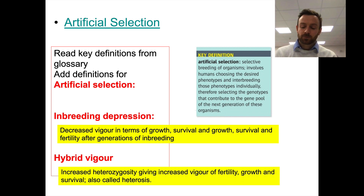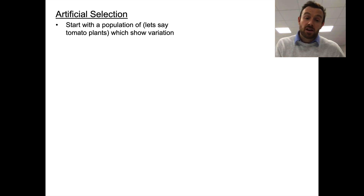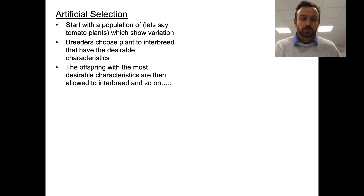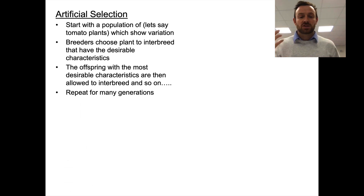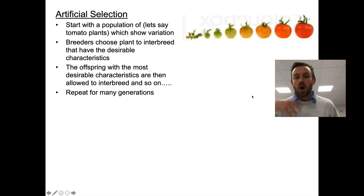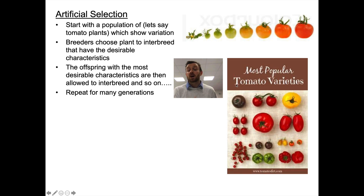Let's go a little bit deeper on artificial selection. You start with a population — say, tomato plants — which show variation. Breeders choose the plants to interbreed that have desirable characteristics, and the offspring with the most desirable characteristics are then allowed to interbreed, and so on, repeated for generations. Eventually you get a change. The wild-type tomato in ancestral times was not as large as the tomatoes we have now, and we've produced a huge variety through selective breeding — just like we bred wolves and changed them into dogs of different varieties.